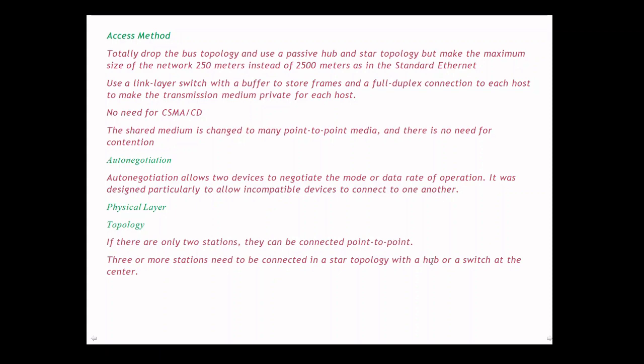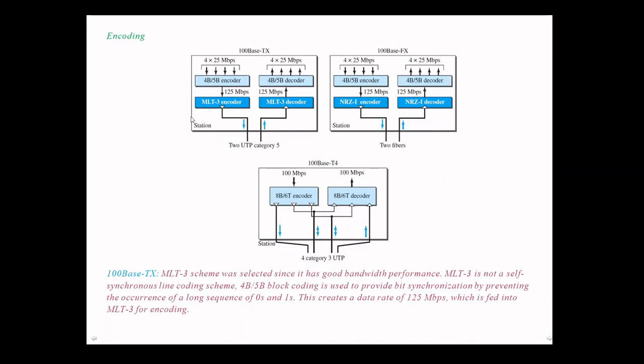There are three implementation techniques in Fast Ethernet technology: 100BaseTX, 100BaseFX, and 100BaseT4. In 100BaseTX, two UTP category 5 cables were used. In 100BaseFX, two fiber cables were used. In 100BaseT4, four category 3 UTP cables were used, coming to the encoding part.